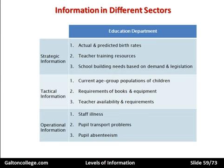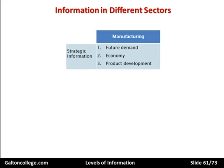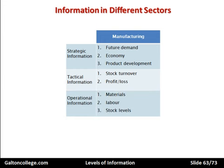We can also look at this by sector rather than specific company. In manufacturing, strategic information includes future demand, state of the economy, employment levels, rate of inflation, and product development — how fast are products being developed and what's the rate of technical progress. At the tactical level, manufacturing looks at stock turnover and profit and loss. At the operational level it looks at materials, labour, stock levels, distribution, and motivation within the workforce — the nitty-gritty issues that ensure manufacturing can prosper. Even within broad sectors like manufacturing, we can see where strategic, tactical, and operational information is required.